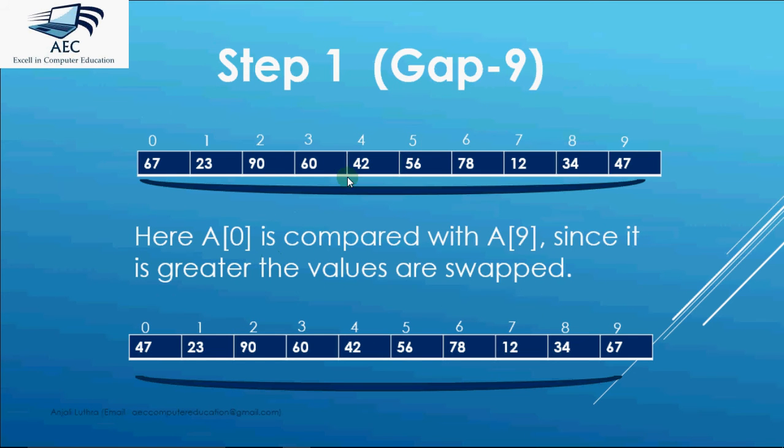So when I have step 1 the gap is initially 9 for 10 numbers we directly make a comparison of a[0] and a[9]. In the given example a[0] is 67 and a[9] is 47. Since it's greater the values are swapped and 47 comes at 0 and 67 goes at 9.